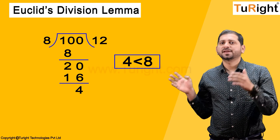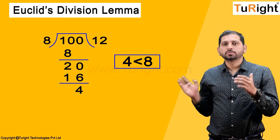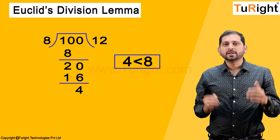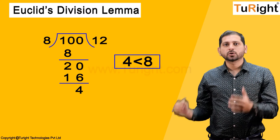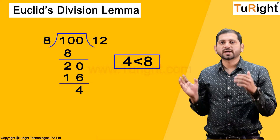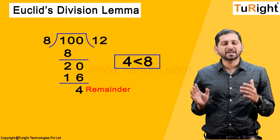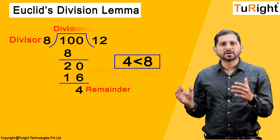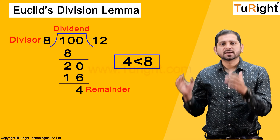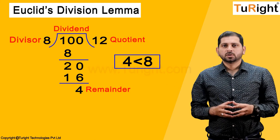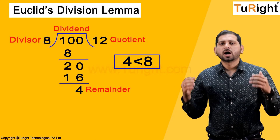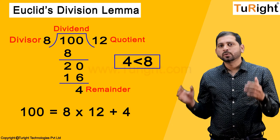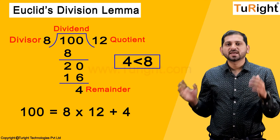4 is less than 8, so we stop the process. Here, 4 is the remainder, 8 is the divisor, 100 is the dividend, and 12 is the quotient. According to the division rule: 100 = 8 × 12 + 4.